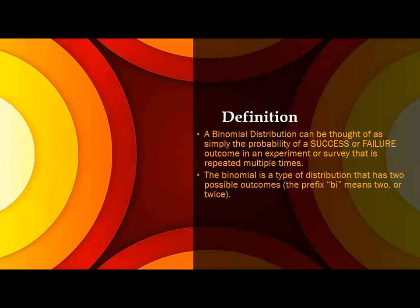Before getting into binomial distribution, last time we saw the normal distribution. So now we are seeing the binomial distribution. Definition: A binomial distribution can be thought of as simply the probability of a success or failure outcome in an experiment or survey that is repeated multiple times.